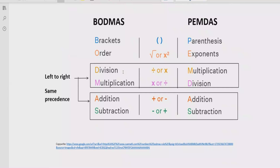After the bracket, you have to look for the exponent or power of any number — if your expression contains any number with a power, solve that part next. Step three is to solve division and multiplication; both have similar precedence, so solve whichever comes first going left to right. Similarly for addition and subtraction, solve whichever operation comes first going left to right.